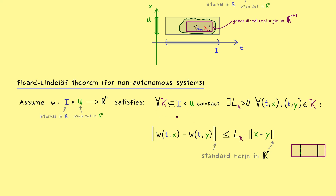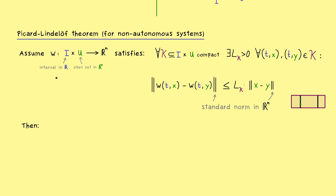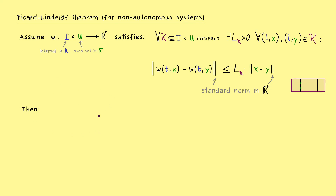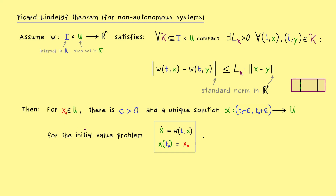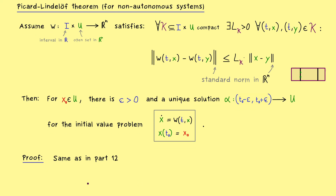With this local Lipschitz condition, we get the same result as in the original Picard-Lindelöf theorem: for a given x₀ in U, we find an epsilon and a unique solution defined on that interval such that our initial value problem is solved. Moreover, we can always extend such a solution to a maximal solution.